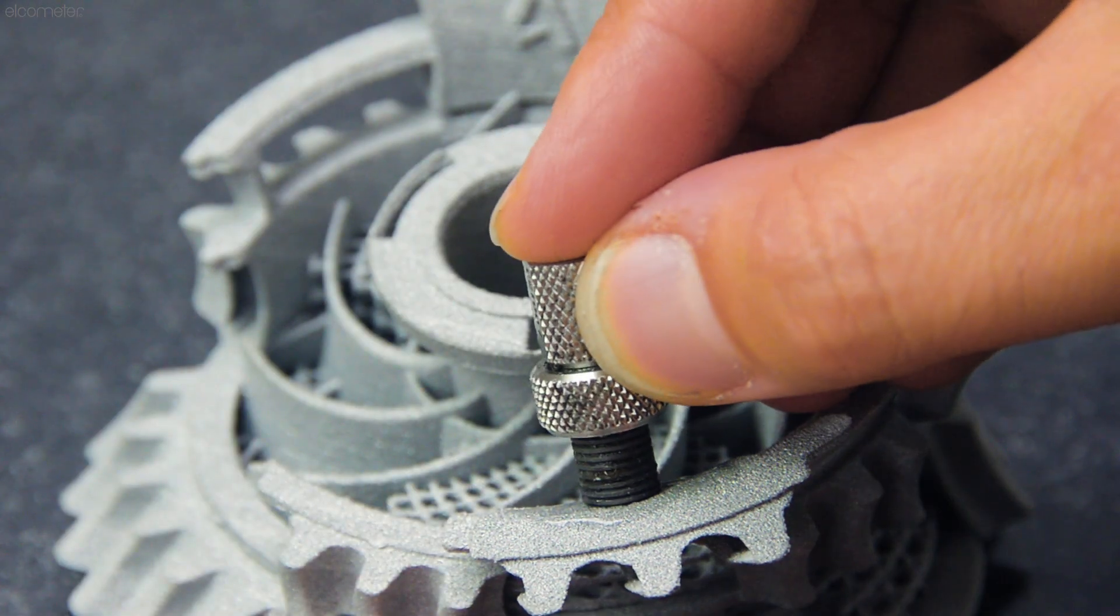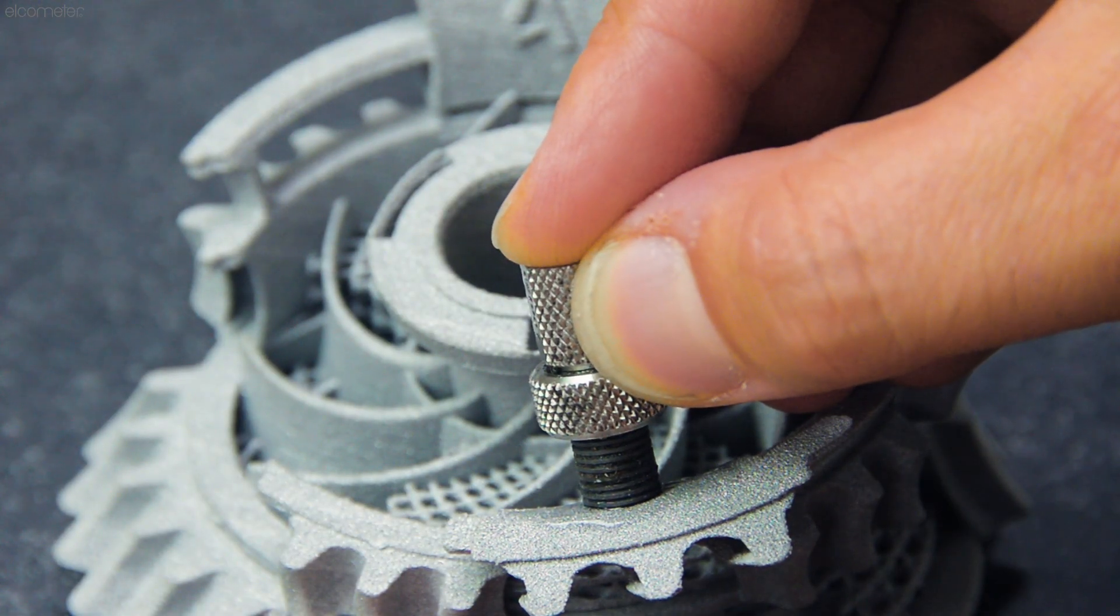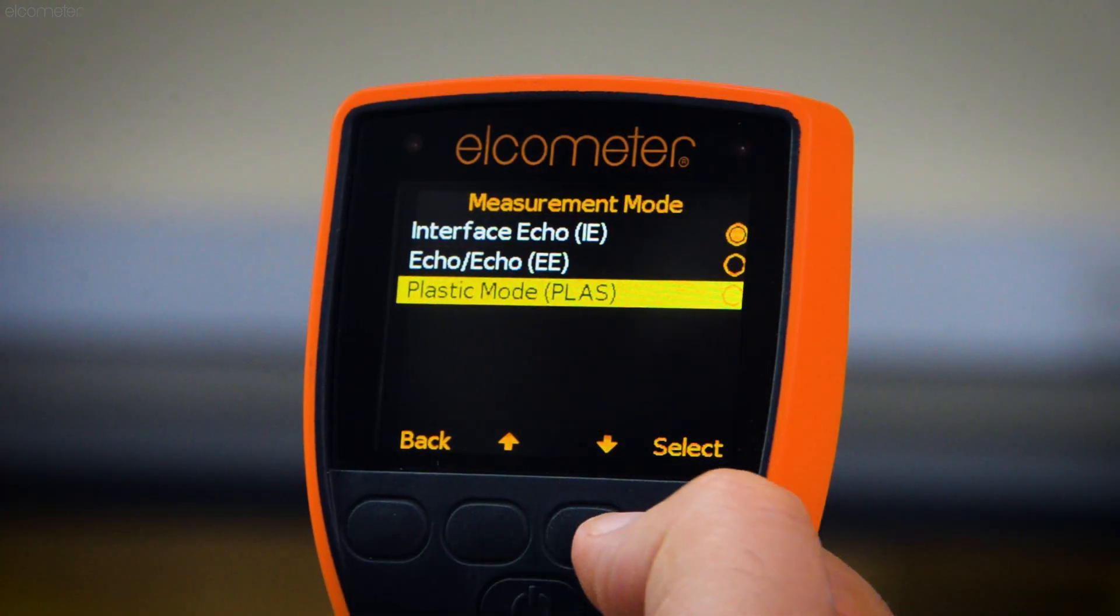While thin plastics and other similar materials should be measured using a graphite delay line with the gauge set to plastic mode.